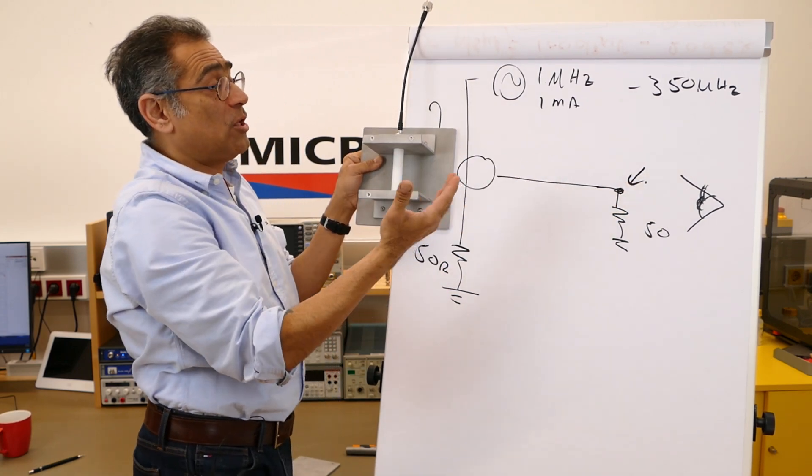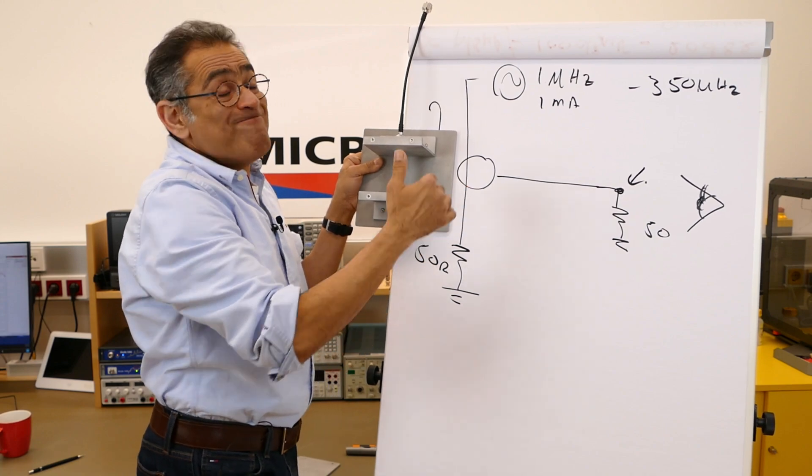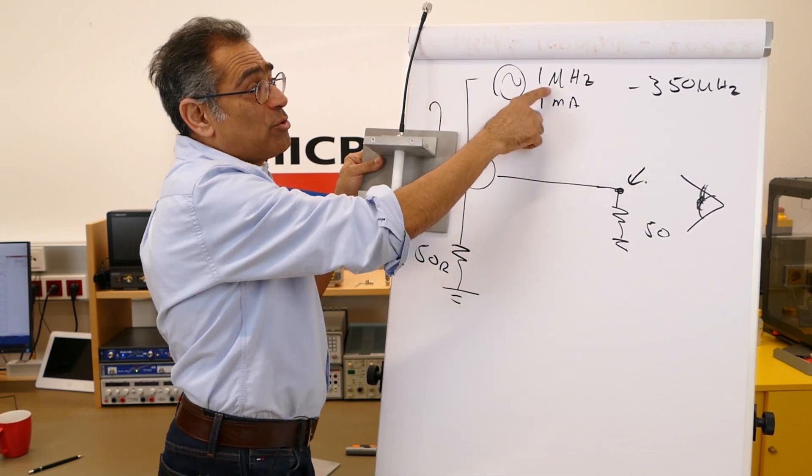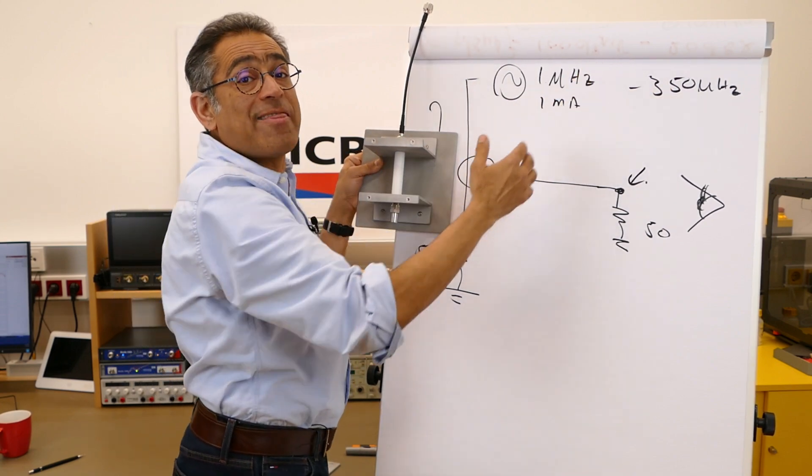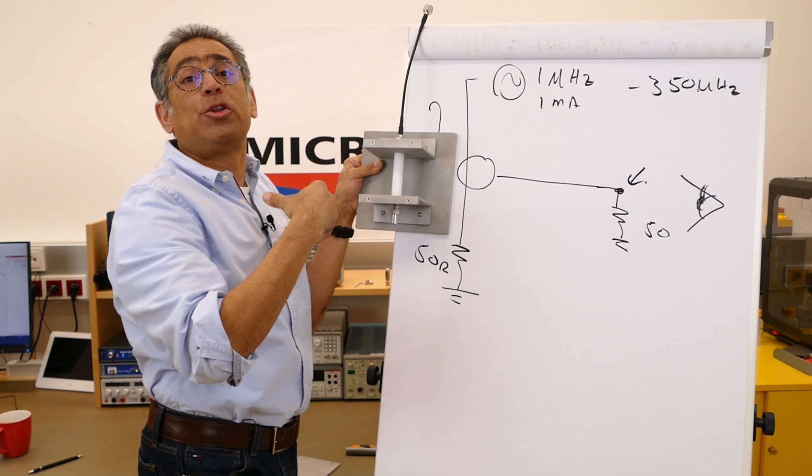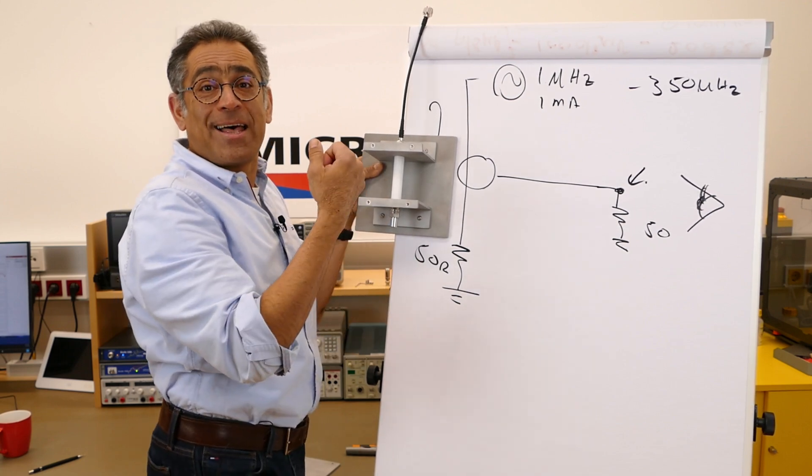Another issue that we have is that because the frequencies are very high, things change - the amplitude that you're injecting at one megahertz may not be the same as the one that you expect at 350, and therefore we have to calibrate and normalize everything before we can make a correct measurement.